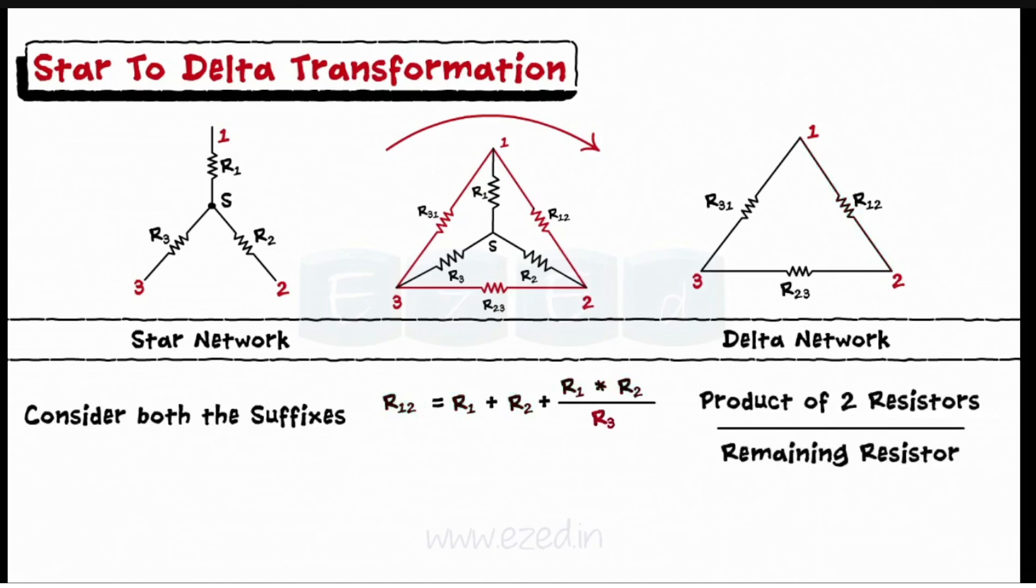Thus, R23 can be written as R23 equals R2 plus R3 plus R2 into R3 upon R1, and R31 equals R3 plus R1 plus R3 into R1 upon R2.